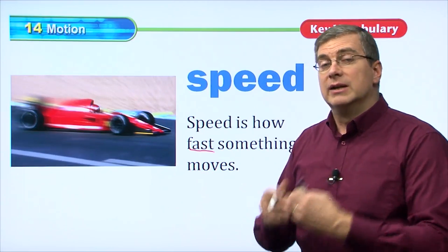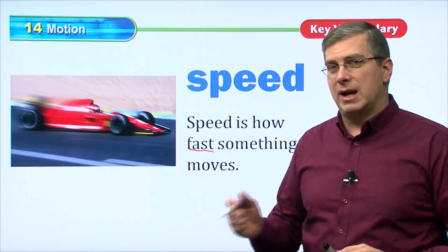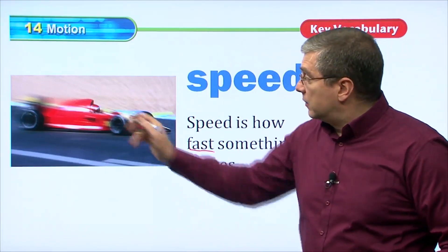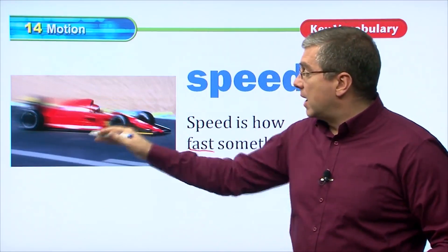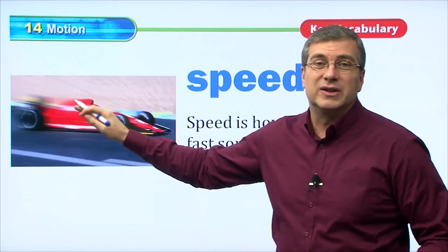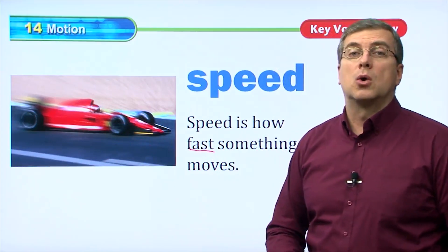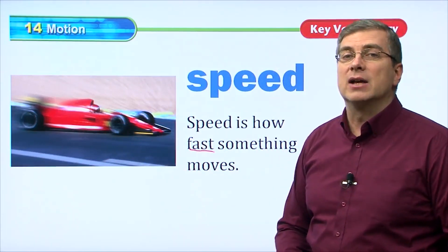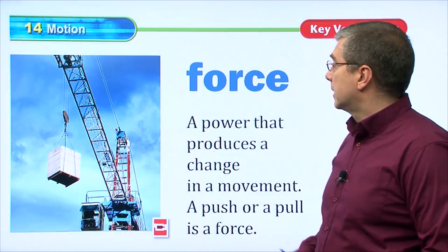When we talk about fast or slow, we're talking about the speed of the object — whatever is moving. What is the speed of that object? How fast is it moving? If we see a car, wow, that looks like it's moving very fast. It's hard to see it because it's moving so quickly — it has a lot of speed.